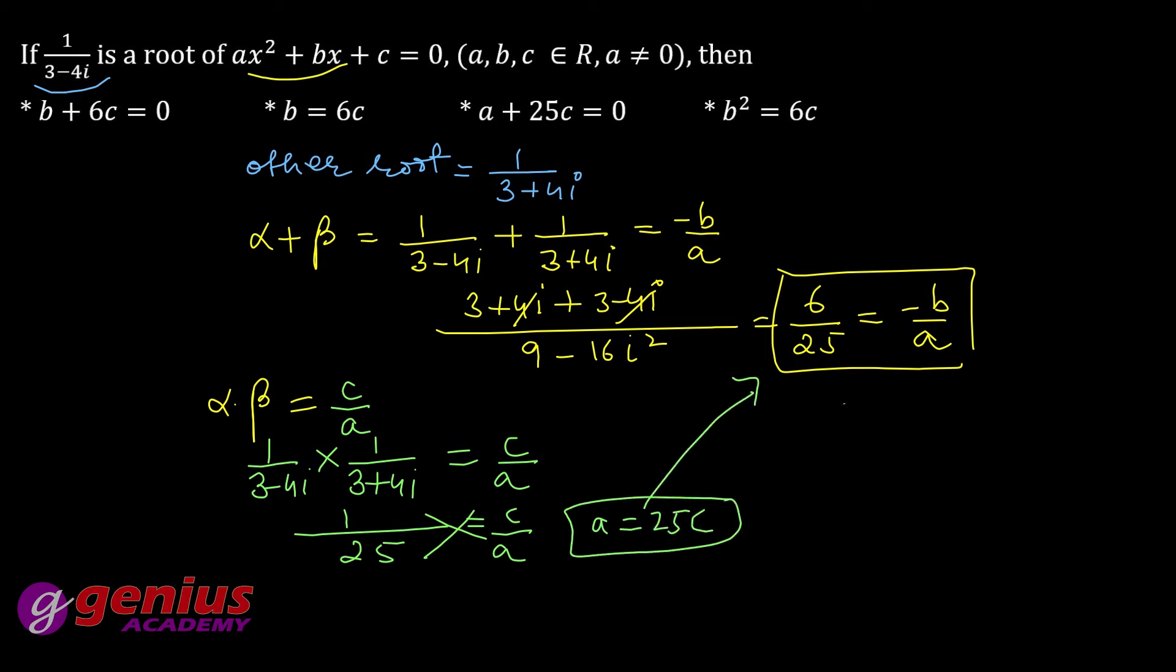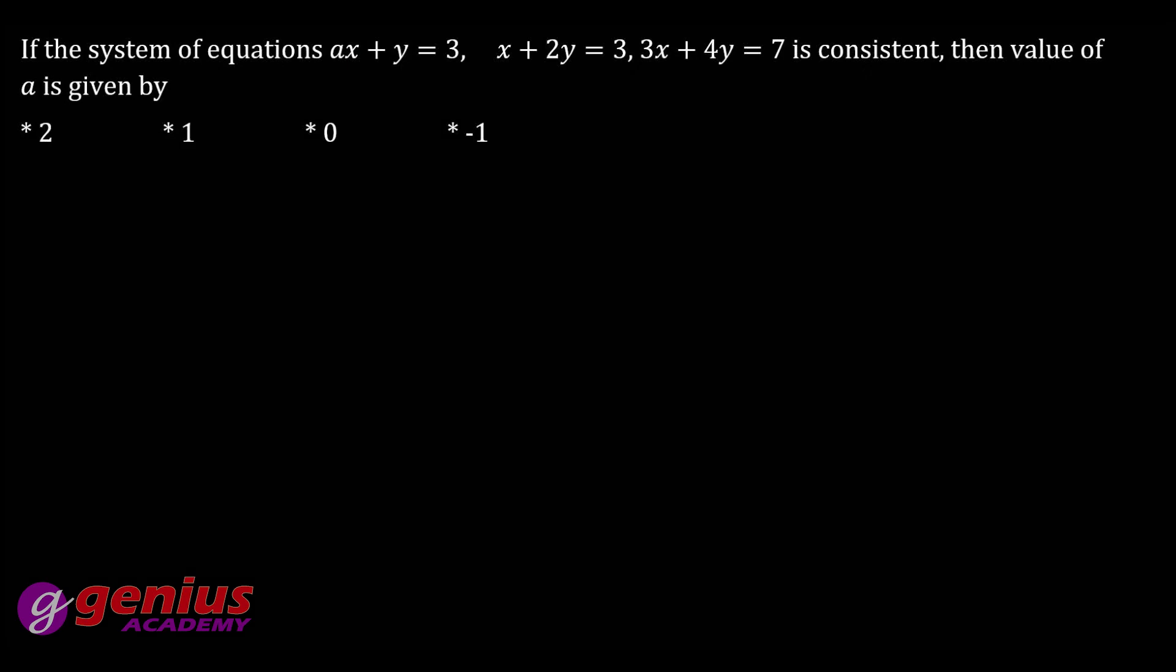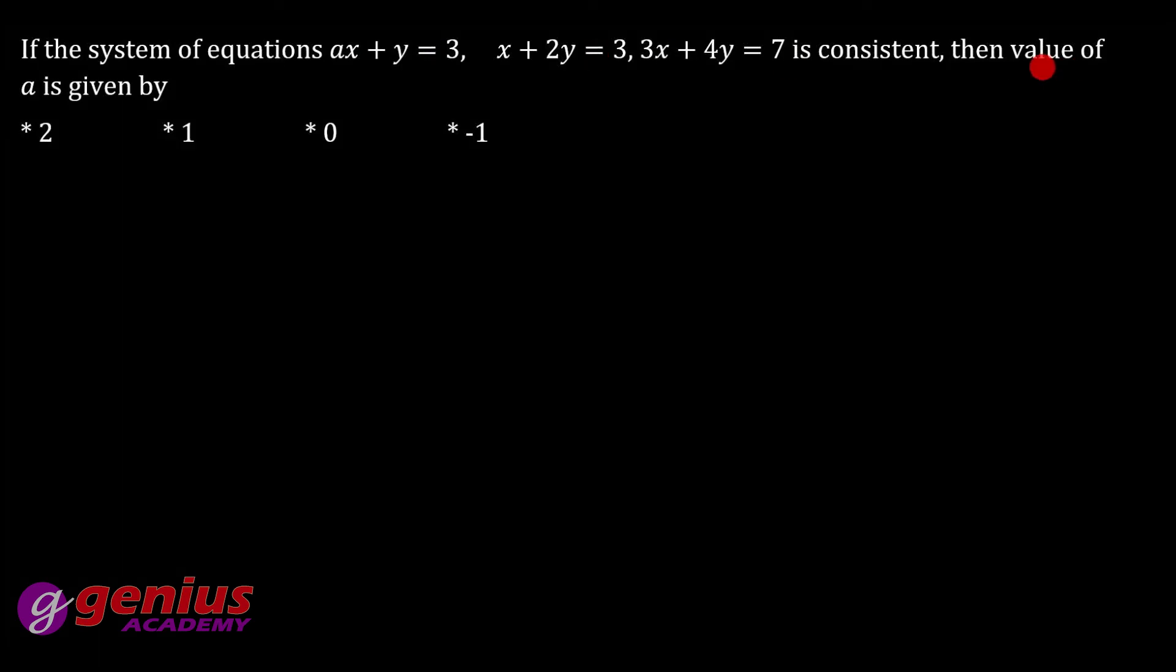Ab yahan put kar dete hai 6a equal to minus b multiply 25. Ab put kar dijiye a ki jagah yahan 25c minus b multiply 25. Ye cancel out and final is 6c plus b equal to zero. Aapka final answer 6c plus b, this one.